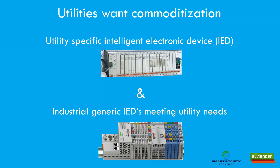We see the same development with the smart devices that utility companies like Alliander install and use in their grids. For a long time, Intelligent Electronic Devices, or IEDs, were specifically designed and developed for utilities. Now, new generations of IEDs are produced as generic industrial equipment with high volumes, a flexible modular setup and built on open-source software. Commoditisation is a general process that affects developments in all industries, though it is difficult to predict exactly when it will occur.